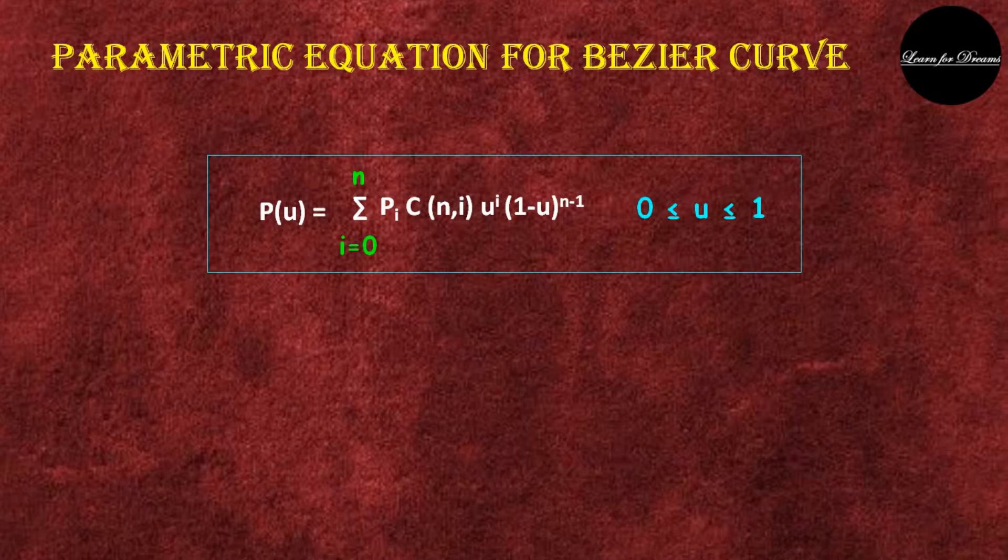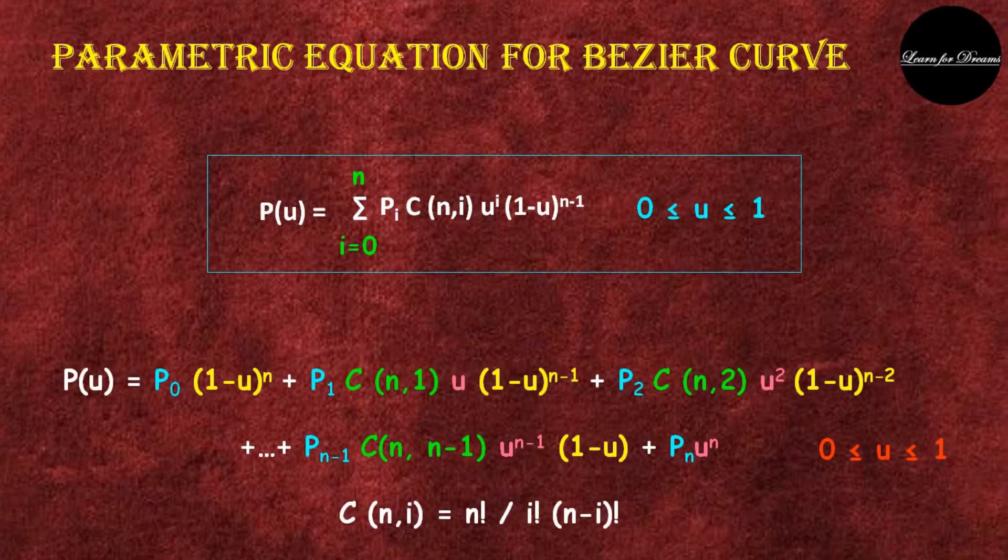If we expand our equation we get this, where C(n,i) is equal to n factorial divided by i factorial into n minus i factorial.